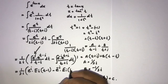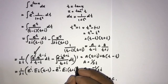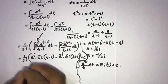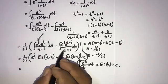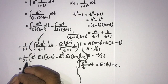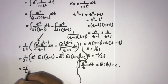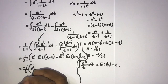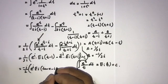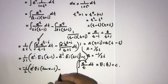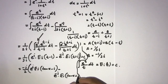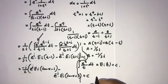Continuing, the second term gives minus e to the minus i times Ei(t plus i) plus C. Now recalling that t equals tan(x), and simplifying — noting i squared equals minus 1, so the prefactor becomes minus i over 2 — the final answer is: (minus i over 2) times e to the i times Ei(tan(x) minus i) minus e to the minus i times Ei(tan(x) plus i) plus C.